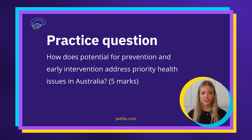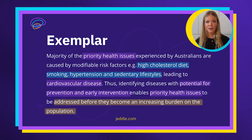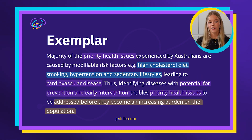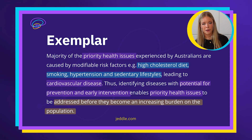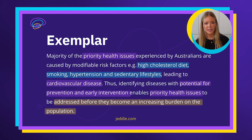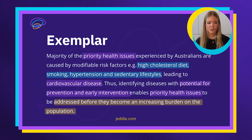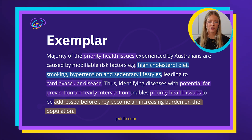Let's have a look at this practice question: how does potential for prevention and early intervention address priority health issues in Australia? The first part of my response was: majority of the priority health issues experienced by Australians are caused by modifiable risk factors, e.g. high cholesterol diet, smoking, hypertension and sedentary lifestyles leading to cardiovascular disease. Thus, identifying diseases with potential for prevention and early intervention enables priority health issues to be addressed before they become an increasing burden on the population.